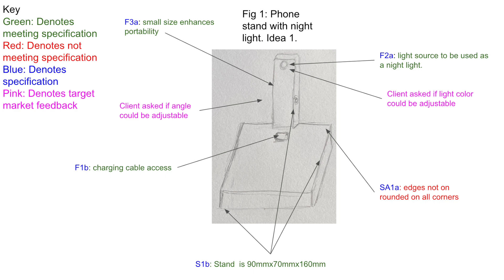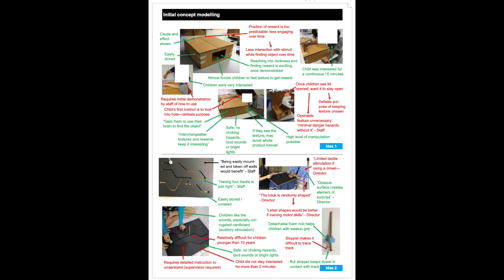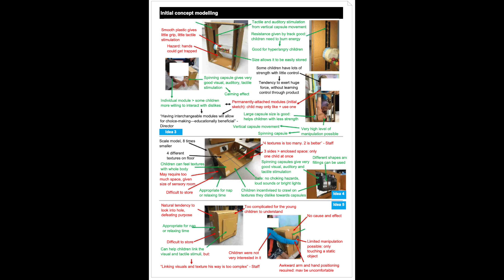This is an example of how you can label your design ideas to show the development. Using a color coding scheme: green denotes meeting the specification, red shows it's not meeting it, blue shows which design specifications specifically are being referenced, and pink shows target market feedback. This example also shows a figure number and is labeled as design idea one. The student has also done a really good job of doing some concept models — they've taken physical models, looked at how those work, labeled them well, and tested and experimented to see if they actually work, which is an important part of the process.